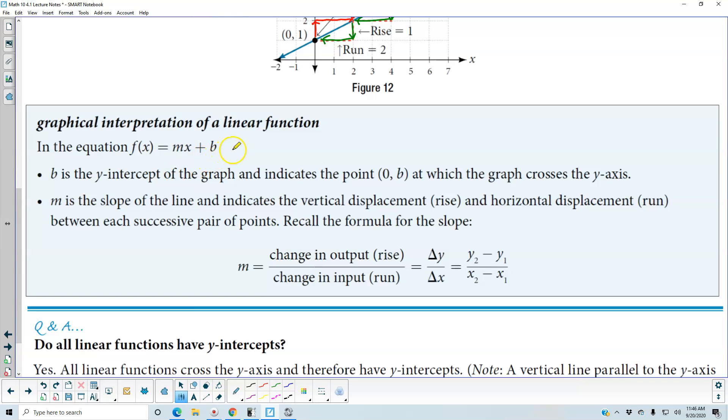The graphical interpretation of a linear function in the equation f(x) equals mx plus b: b is the y-intercept of the graph and indicates the point 0b, at which the graph crosses the y-axis.